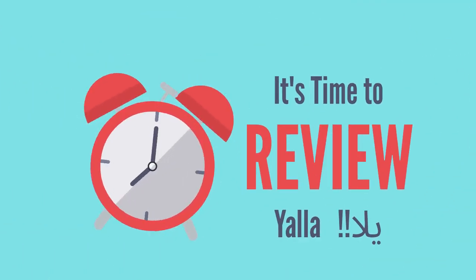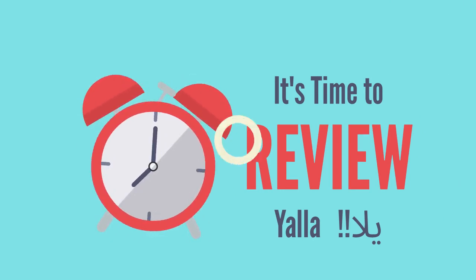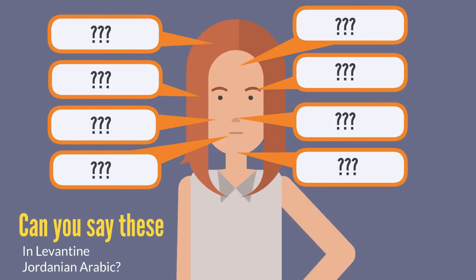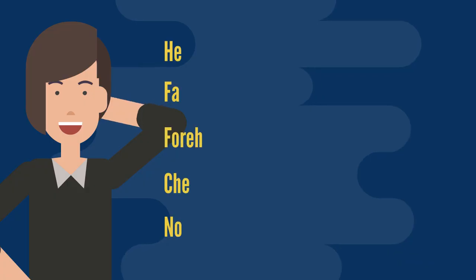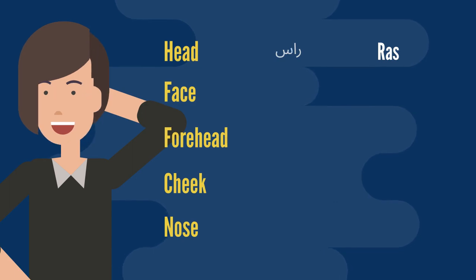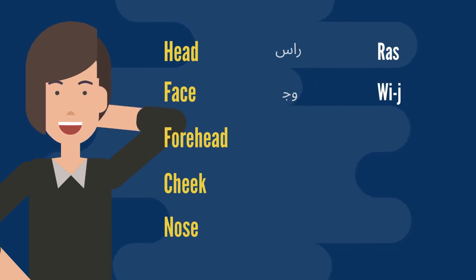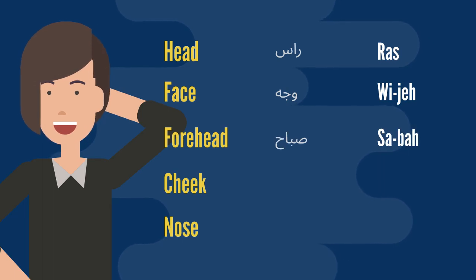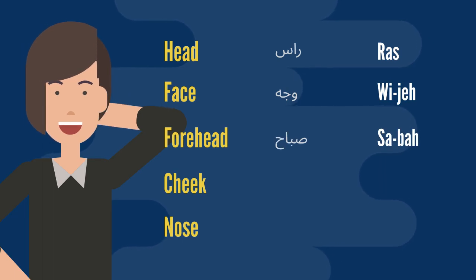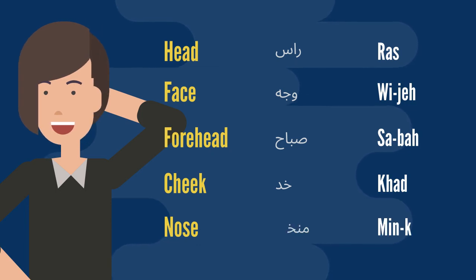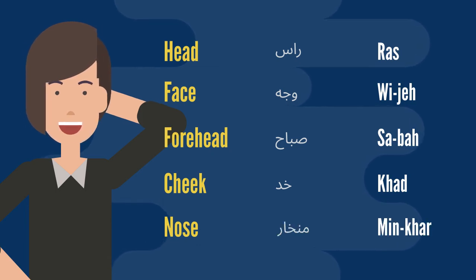All right, it's time to review. Head — rās. Face — wujih. Forehead — sabāh. Cheek — khād. Nose — minkhār.